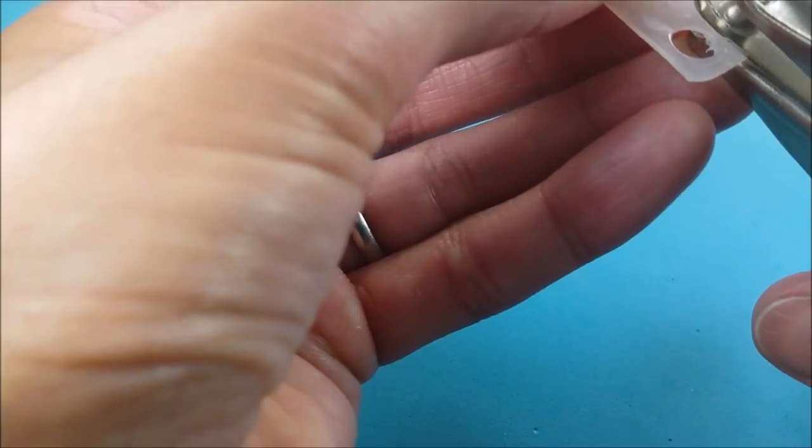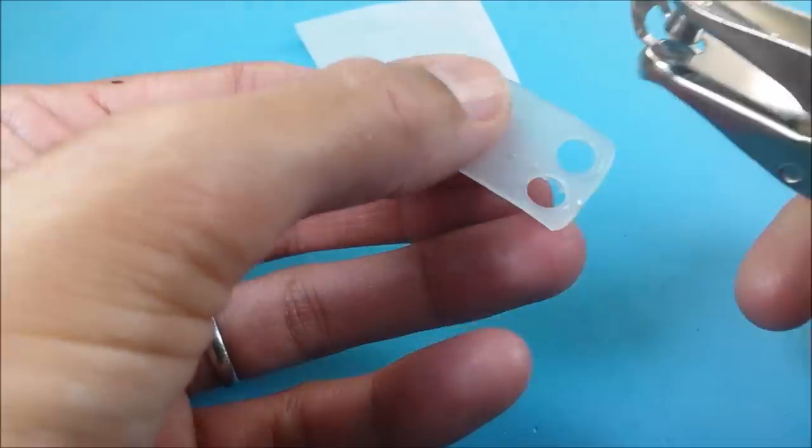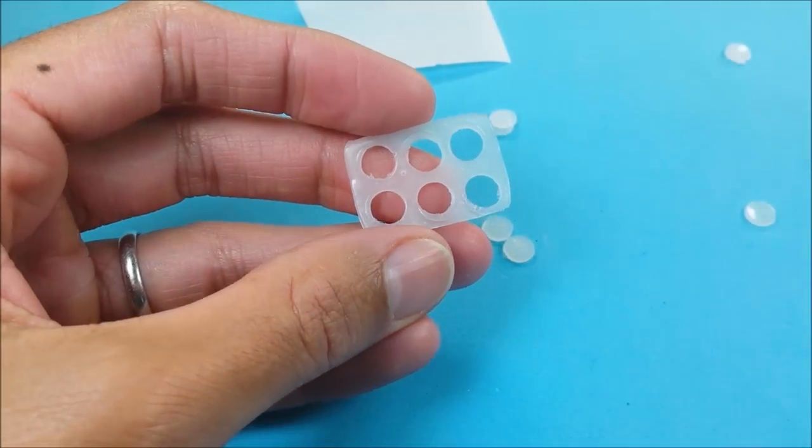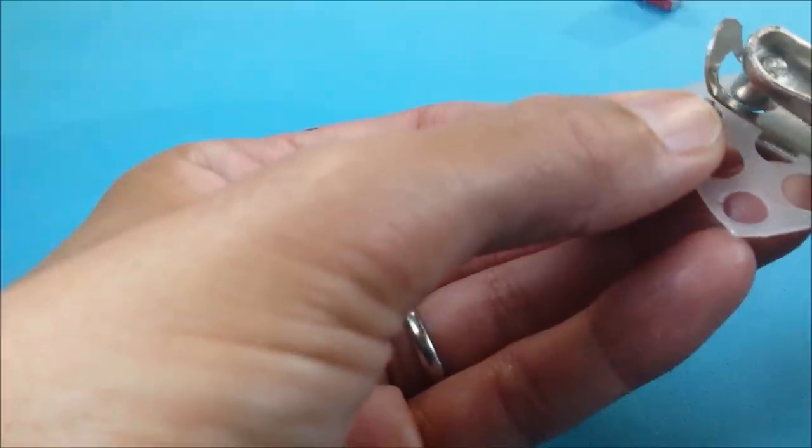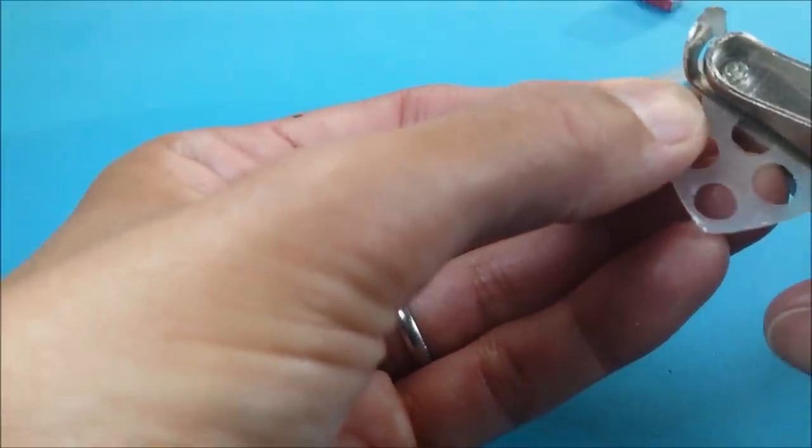And with my hole punch I can punch out six holes. And then I can use tiny scissors or my hole punch to expand that hole until it'll fit my soda cans.